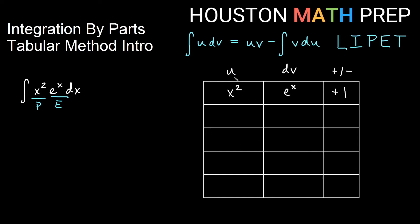So in my u column, if I take all my derivatives first, if I start with x squared, the derivative of that is 2x, the derivative of that is 2, and then the derivative of that is 0.